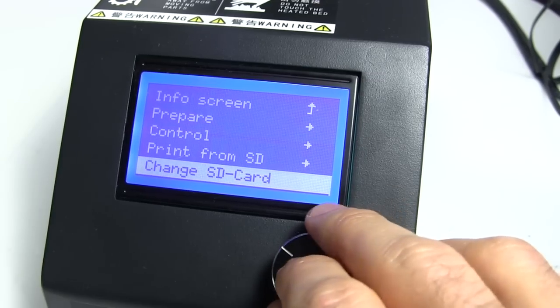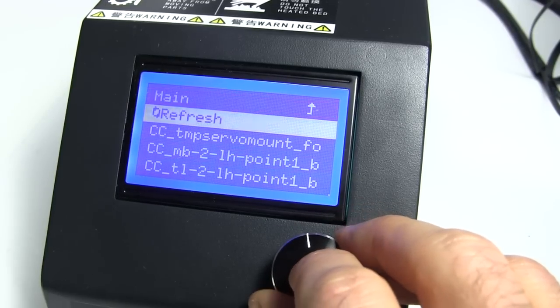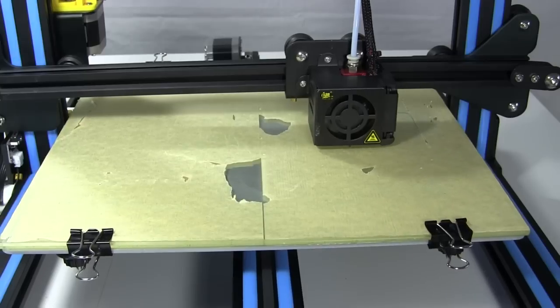Finally I make sure it knows that I inserted the micro SD card and select the G-code file to be printed. And off it goes.